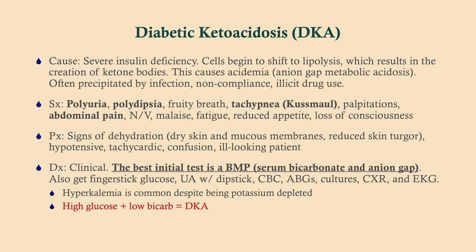DKA is due to a severe insulin deficiency, and that's why it tends to be in type 1 diabetics. These patients just don't have any insulin, so they can't bring sugar into their cells — their cells think they're starving. They're spilling sugar into their urine causing high urine volume, so polyuria, polydipsia, and polyphagia. Because they're unable to metabolize glucose, they metabolize fat instead. A byproduct of fat metabolism is ketones, which push bicarb out of the blood, causing an anion gap metabolic acidosis.